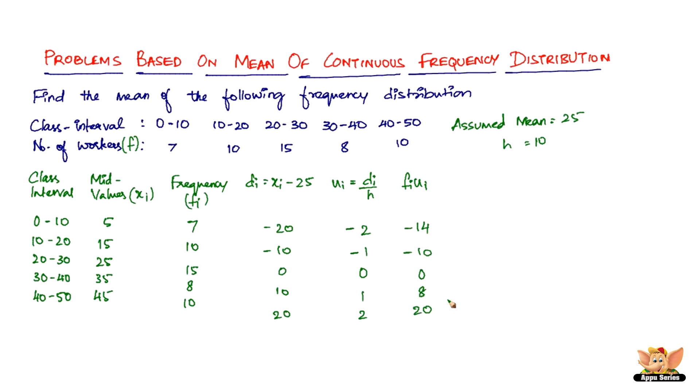So that's all. The only difference in the continuous frequency distribution is the class intervals have to be converted to mid values, which are the Xi. Now we need the sum of the frequency, that's the capital N, so that is 50. Then we need summation of Fi Ui, which is equal to 4 exactly.